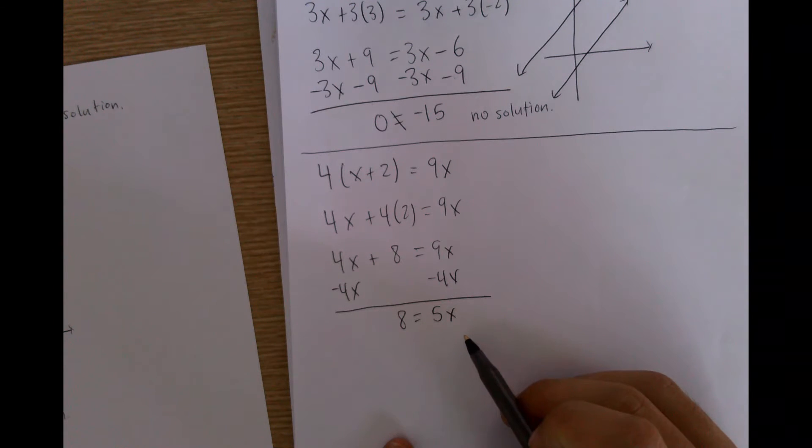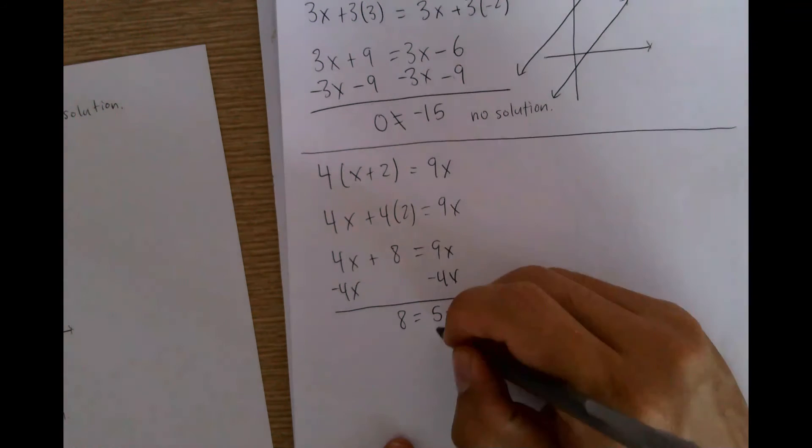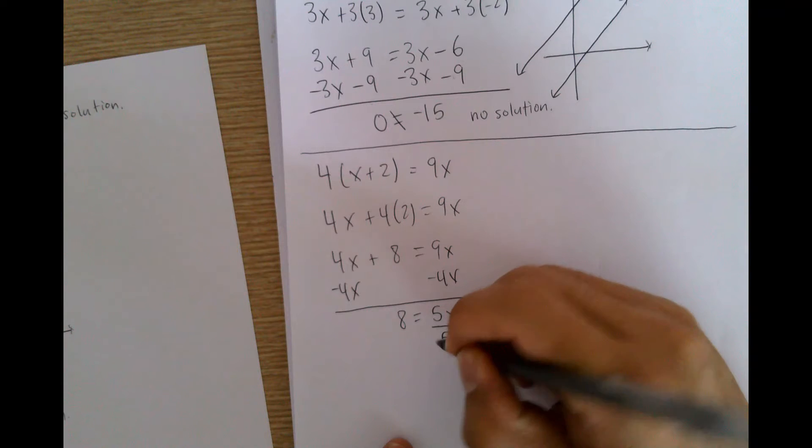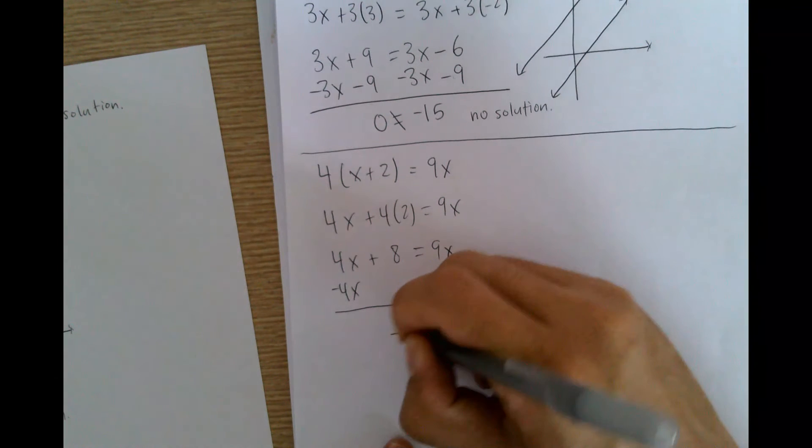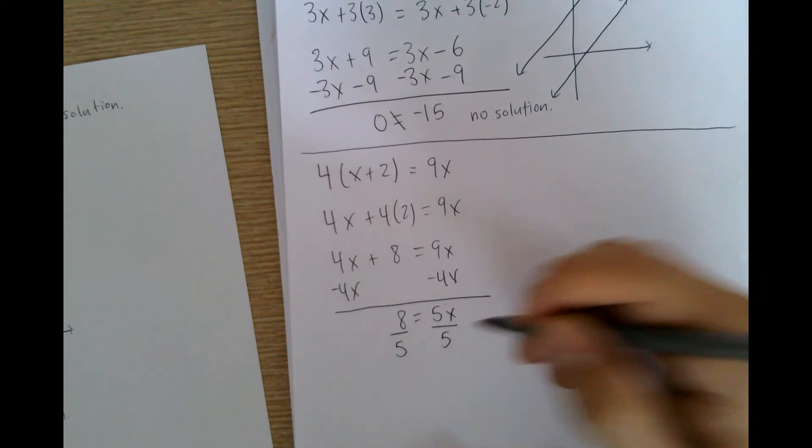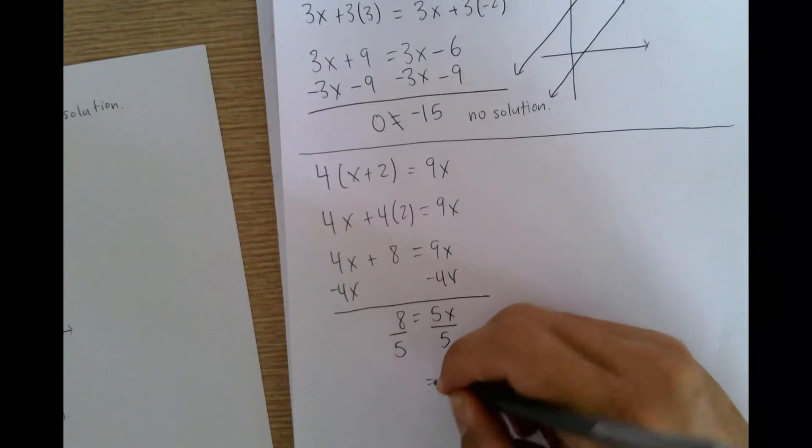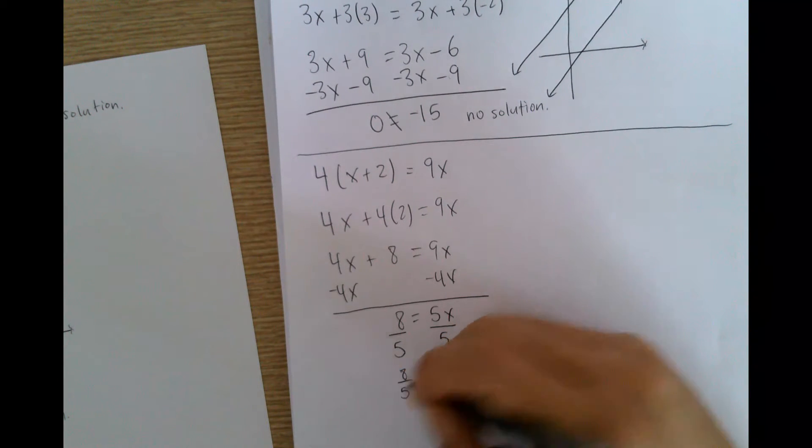The last step I would do here is to get rid of the coefficient or the number of the x. And how you do this is by dividing, because this is 5 times x. So to get rid of it, use the opposite operation. You get x is equal to 8 divided by 5. And that would be your answer.